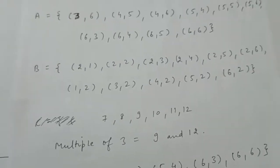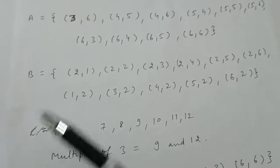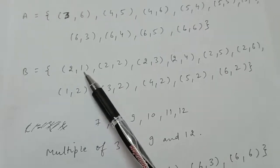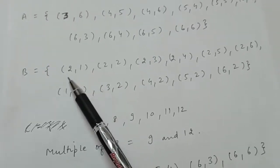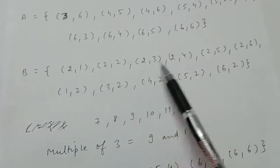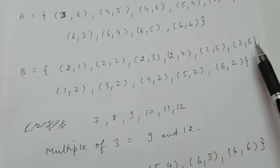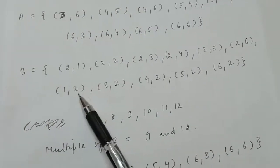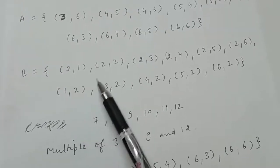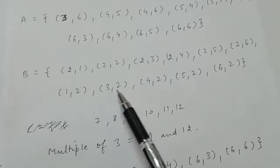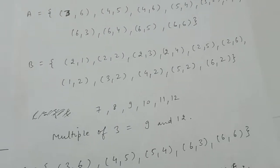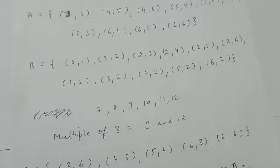Event B is that 2 occurs on either die — on the first die, the second die, or both. If 2 occurs on the first die, the cases are (2,1), (2,2), (2,3), (2,4), (2,5), (2,6). If 2 occurs on the second die, the additional cases are (1,2), (3,2), (4,2), (5,2), and (6,2) — (2,2) already counted.